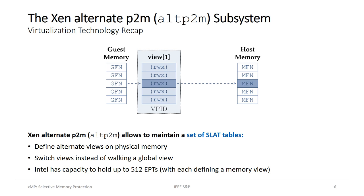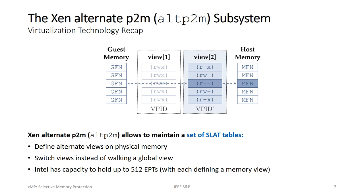Let us briefly refresh our memory on virtualization technology. Normally, a VMM uses only one set of second-level address translation tables — SLAT or EPT on Intel — to translate guest physical to host physical memory. One set of EPT tables defines the guest's view on physical memory, mainly through access permissions. The Xen alt-p2m subsystem allows dynamically allocating and switching between different views. By switching views, we can efficiently change memory access permissions without walking the EPTs of a global view and without affecting other vCPUs. This is exactly the feature we use as a central building block for XMP.